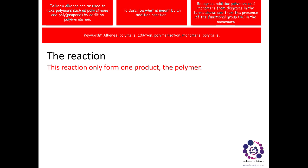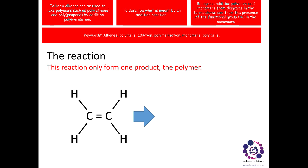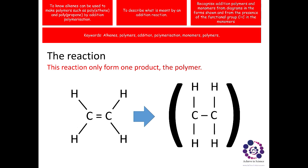We can represent what's happening in the reaction using some diagrams. The reaction forms one product, the polymer. So we start off with the monomer, the alkene, shown with a double bond, and react it together with other alkenes, other monomers, to produce a big, long chain. The polymer is going to contain the same elements, so it's still going to contain two carbons and four hydrogens, and you can see that in the diagram here.